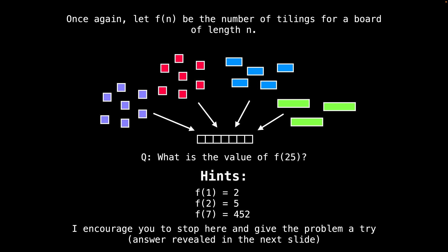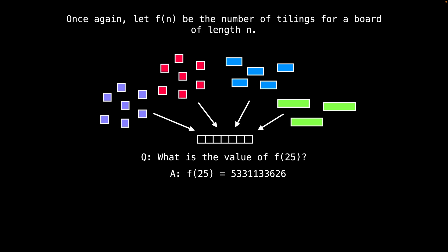I'm going to reveal the solution in the following slide. So according to my calculations, f(25) is a pretty large number: 5,331,133,626. It's actually not uncommon for these combinatorial dynamic programming problems to yield such large results, because the answers tend to grow very quickly.